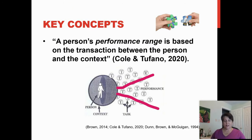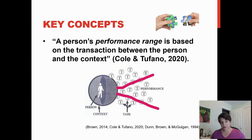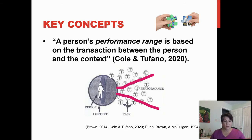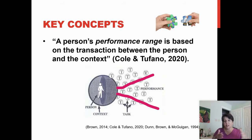Performance range is the number and types of tasks available to the person, but it's based on a transaction that's constantly going on. There are times when the environment provides more supports and times when it provides less support. For example, maybe my skills and abilities haven't changed, but I moved to an apartment where there's not as much opportunity for gardening as in a house with a large backyard — a limitation based on environment, not skills. Alternatively, if I broke my arm, I'd temporarily be unable to garden because the person characteristics changed, not the environment. We have to think of this constant transaction between environment and person that either expands or limits the performance range.